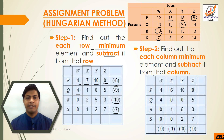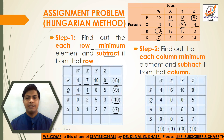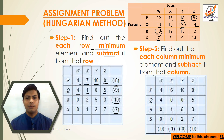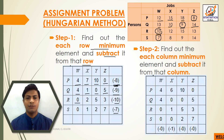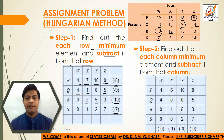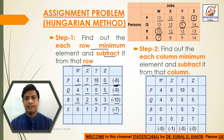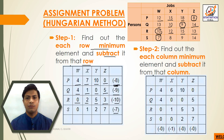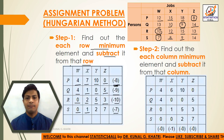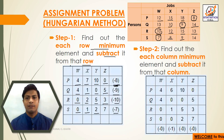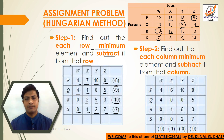Continuing row 2: 10−9=1, 9−9=0, 14−9=5. In the third row, the minimum element is 10: 10−10=0, 12−10=2, 15−10=5, 13−10=3. In the fourth row, the minimum element is 7: 7−7=0, 8−7=1, 9−7=2, 14−7=7.